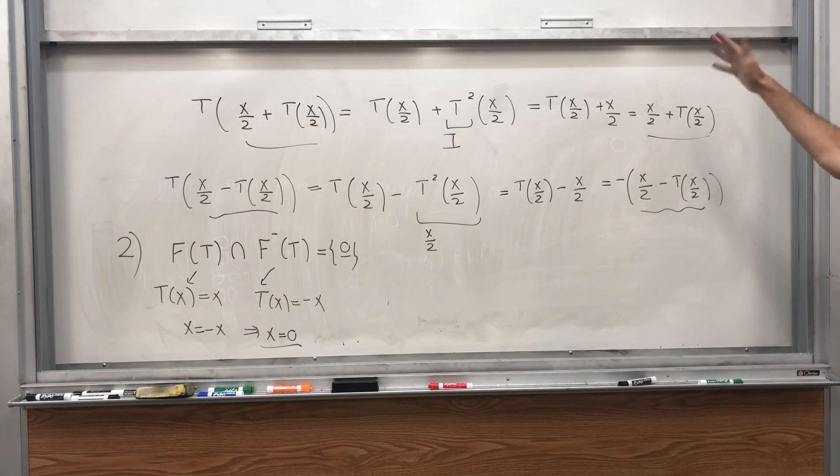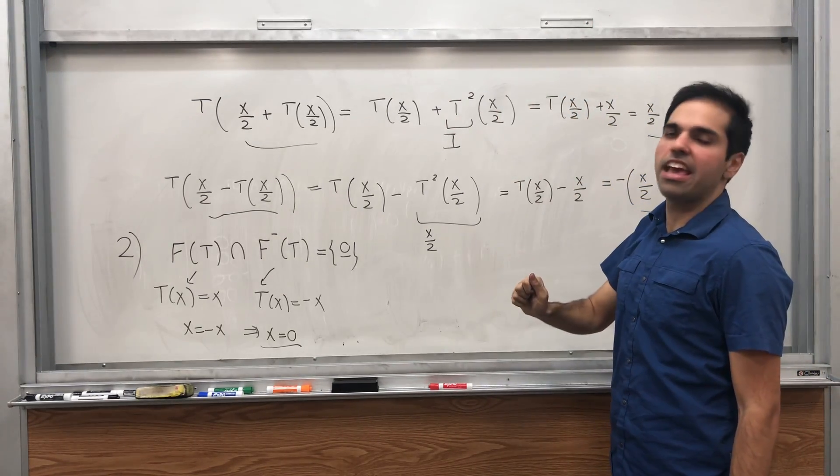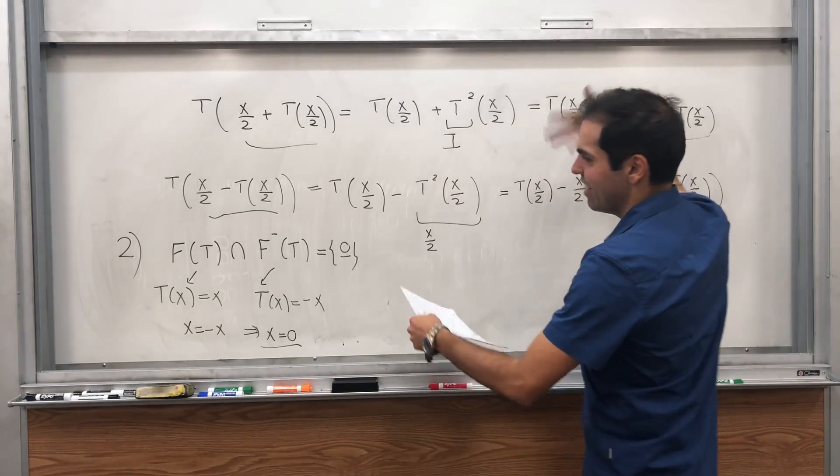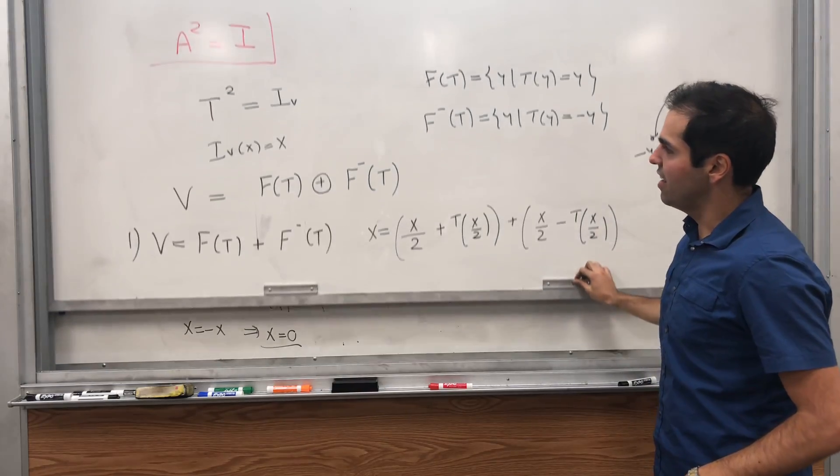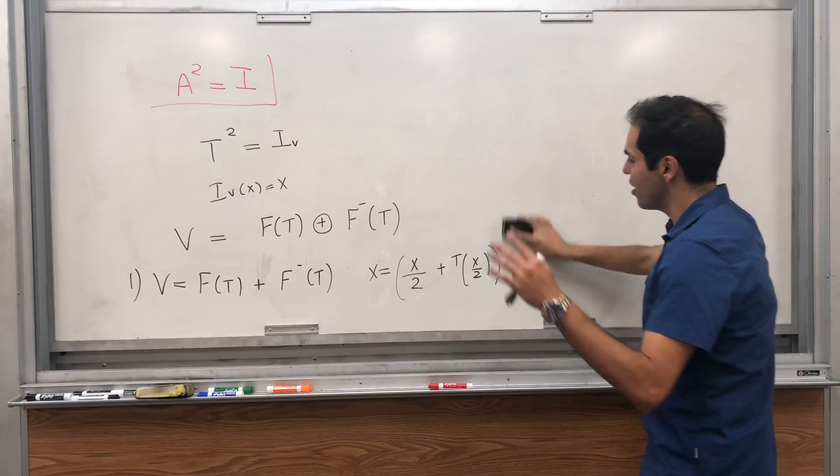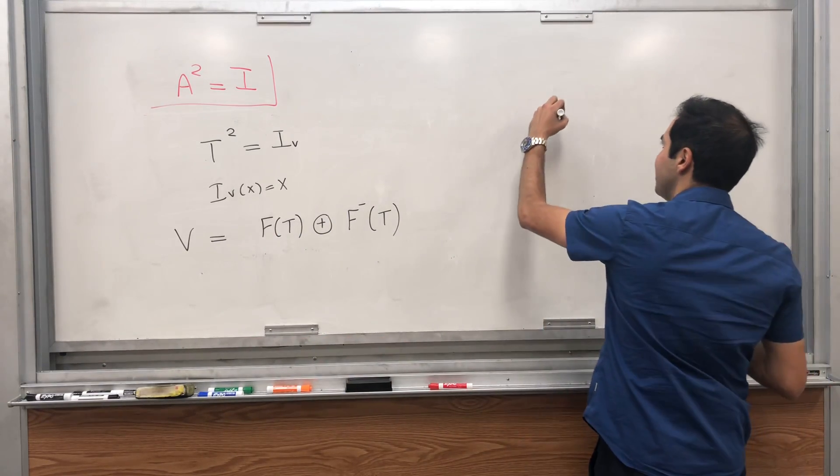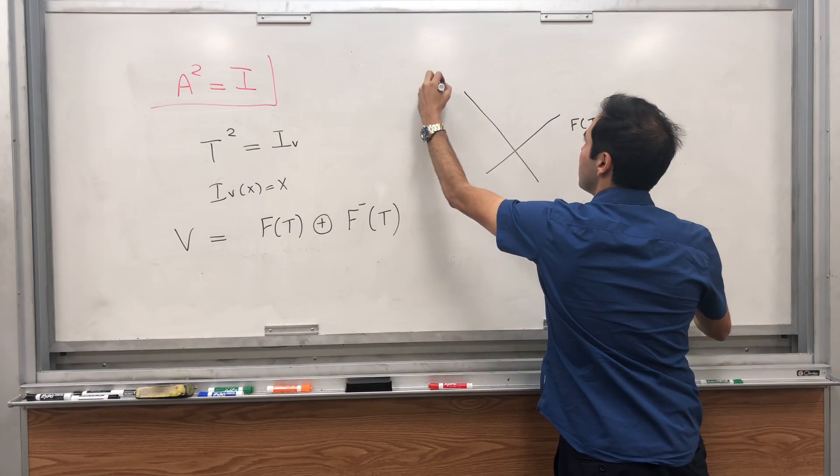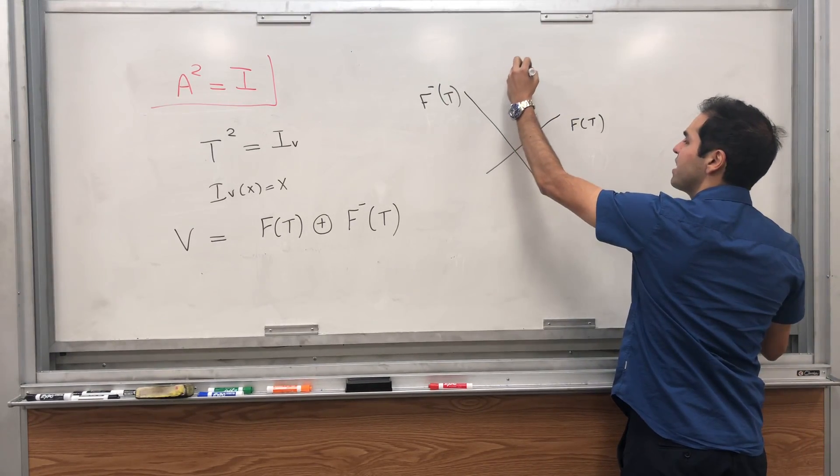So indeed their intersection is the zero space, and therefore we do have that V is the direct sum of the fixed point space and the anti-fixed point space. And what is that telling us geometrically? It tells us as follows. So again I like to think of direct sums as axes, so think of the x-axis and the y-axis, except here we have the F(T)-axis and the F minus T-axis.